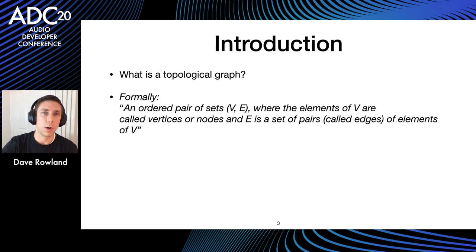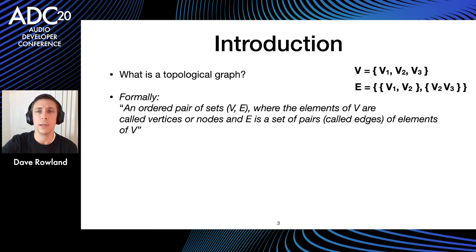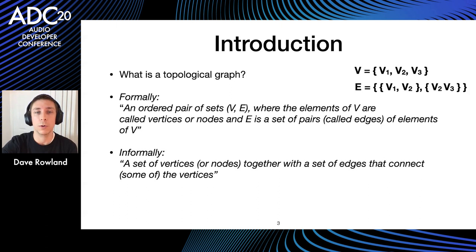What is a topological graph? The formal definition states it's an ordered pair of sets V and E, where the elements of V are called vertices or nodes, and E is a set of pairs called edges of elements of V. In more informal language: a set of vertices or nodes together with a set of edges that connect some of the vertices.